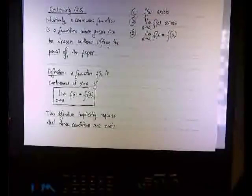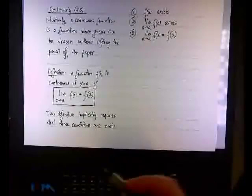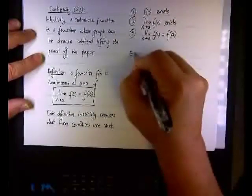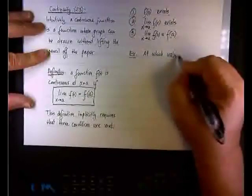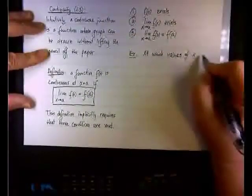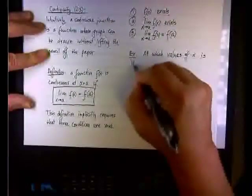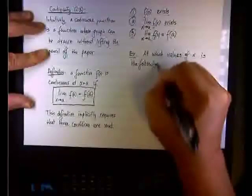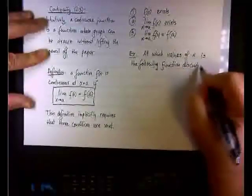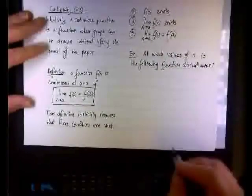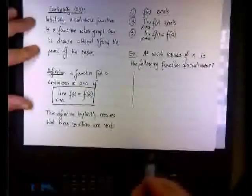Let's follow this with an example that goes like this. I'm going to sketch a graph, and I'm going to ask you at which values of x the following function is discontinued. So at which values, actually there is more than one, so I'll put values of x, is the following function discontinued.